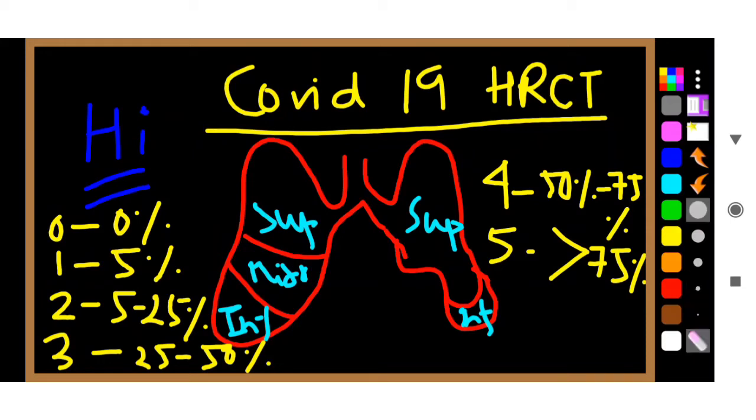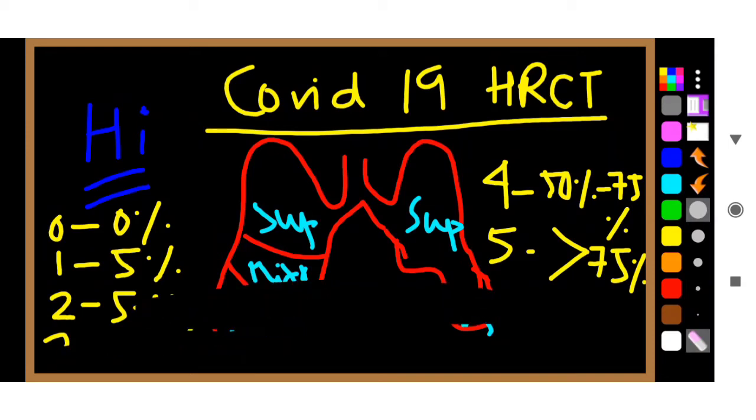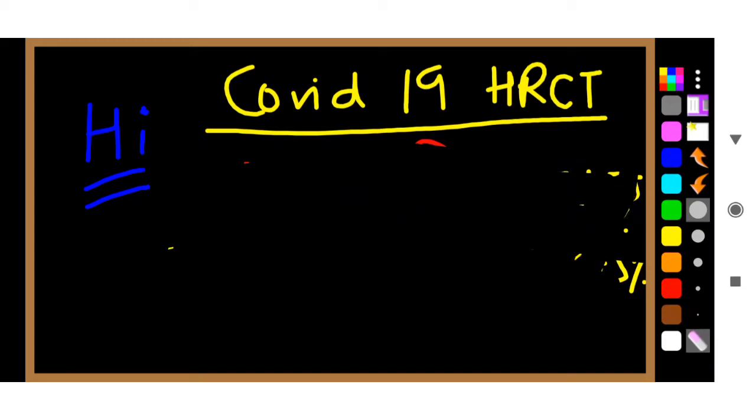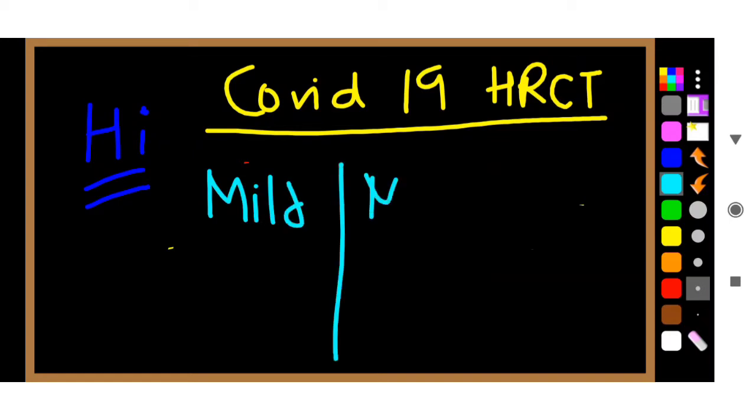Now there are three important categories for this HRCT. Let me erase this so that I can write it down for you. There are three important categories: mild, moderate, and severe.